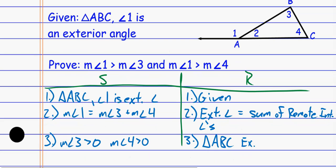Now from here, using the comparison property we just talked about: if the measure of angle one is angle three plus angle four, then it's got to be bigger than angle three, and it's got to be bigger than angle four. So the measure of angle one is greater than the measure of angle three, and the measure of angle one is greater than the measure of angle four. If angle three gets something added to it and that equals angle one, then angle one has to be bigger than angle three because it was angle three with something added on. That's just the comparison property.